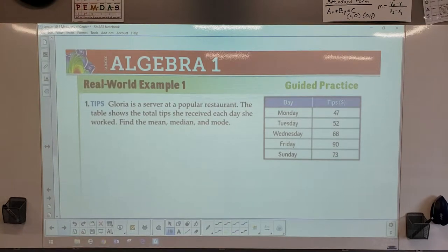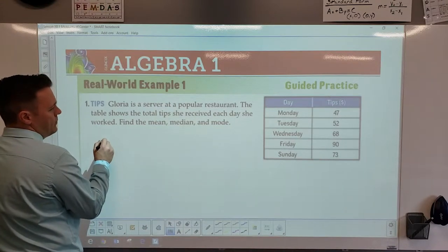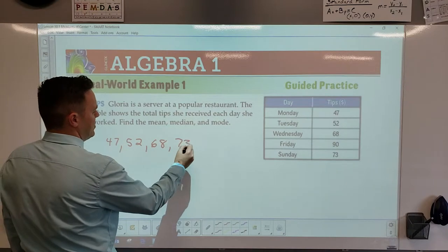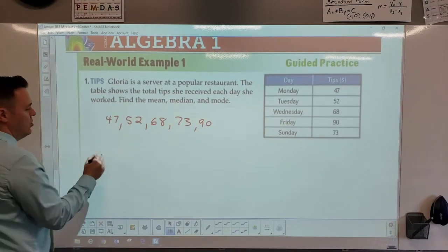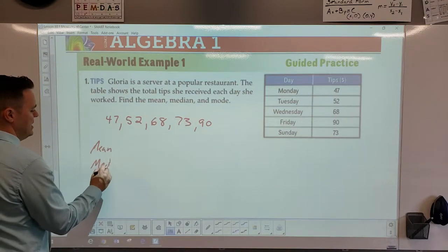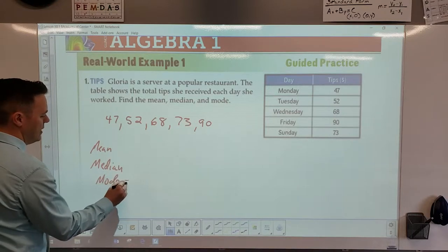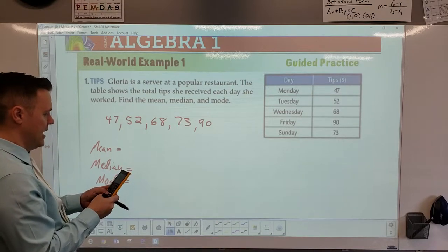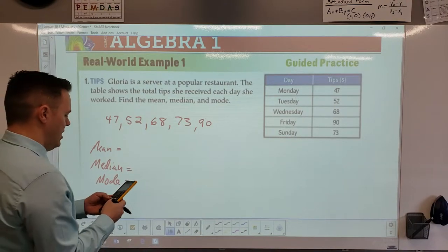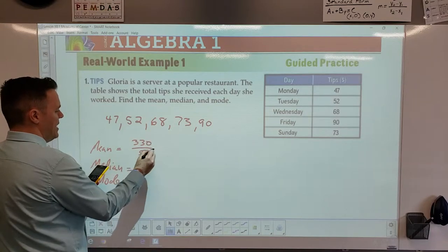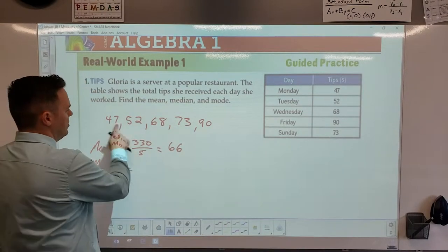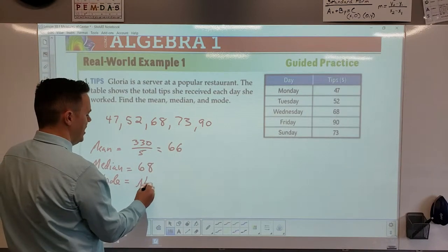Now you try. Rearranging the new dataset from least to greatest: 47, 52, 68, 73, 90. The mean is 47 + 52 + 68 + 73 + 90 = 330, divided by 5, which equals 66. The median is the middle value: 68. The mode is none — there are no repeating numbers.